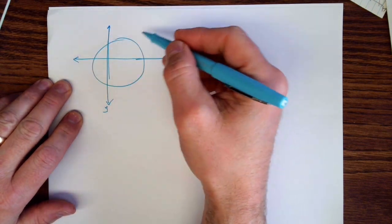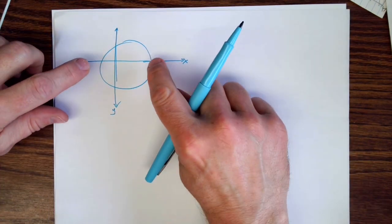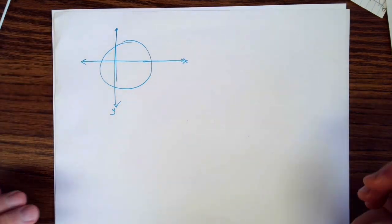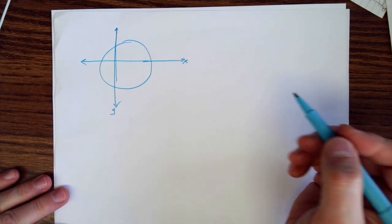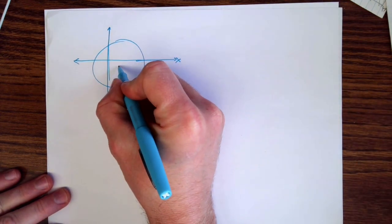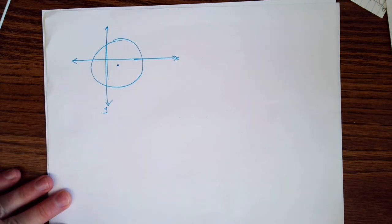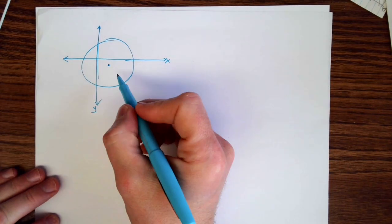We can draw a vertical line anywhere through that circle, and except for the two spots at the end, it's going to cross through in more than one spot, which means it's not a function. But then we come back to the question of how do we write the equation for a circle.